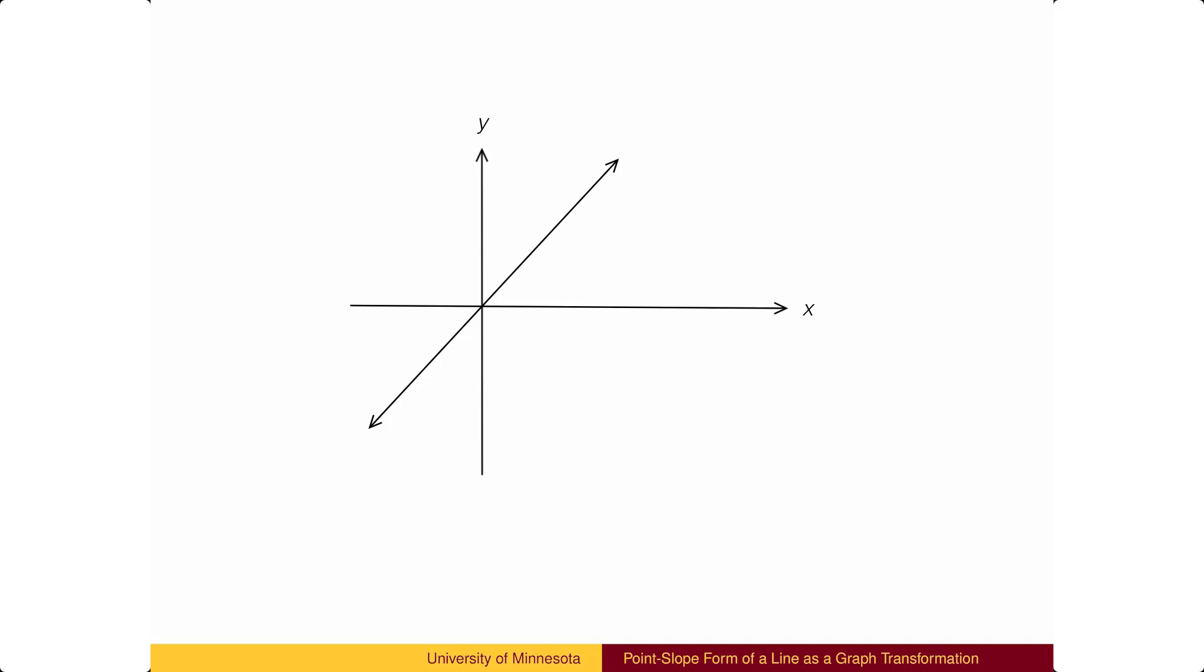We will think of the point-slope form of a line by starting with a standard line y equals x and transforming it by moving it horizontally and vertically and by stretching it vertically.